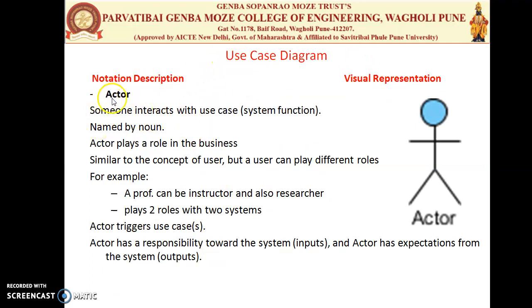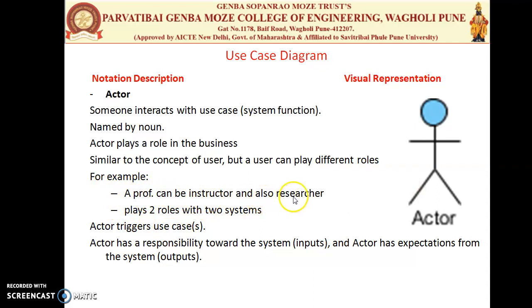The first notation is the Actor. The Actor is someone who interacts with the Use Cases, and Use Cases are nothing but the system function. The Actor can play a different role. For example, a Professor plays the role of Instructor, and is also a Researcher, a Teacher, and a GFM. So a Professor can play different roles with different systems.